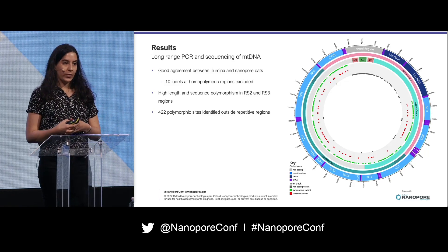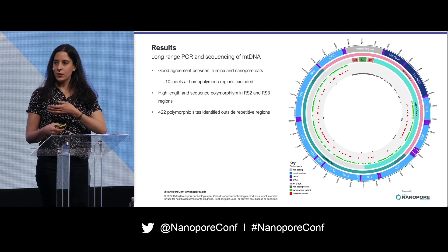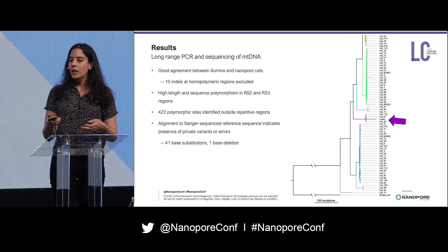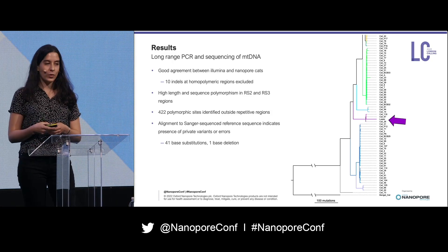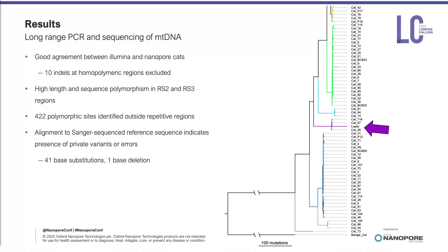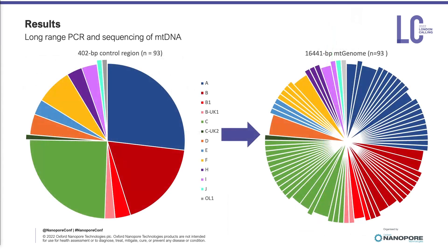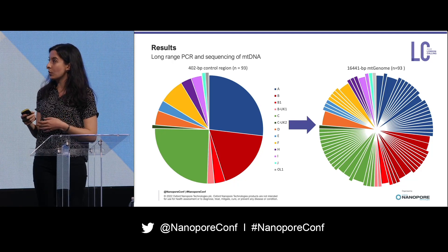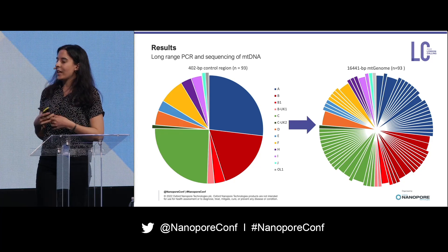We identified 422 polymorphic sites outside the repetitive regions, in contrast to the 25 variable sites seen in the 402 base pair control region from the 152 cats. Through this process we aligned our cats to the Sanger sequence reference, which was generated about 25 years ago, and we saw that it has quite a long branch length indicating the presence of errors or private variants — it has 42 such unique sites. From the 402 base pair control region from the 93 cats, we got three unique profiles, but looking at variation across the mitochondrial genome, we now have 60 unique mitotypes, and we've been able to reduce the number of cats in the largest group from 25 down to four.